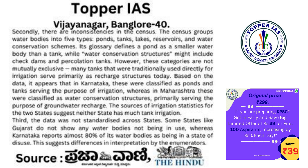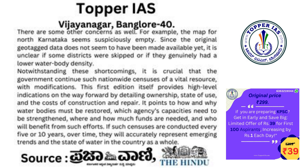Third, the data was not standardized across states. Some states like Gujarat do not show any water bodies not in use, whereas Karnataka reports almost 80% of its water bodies as being in a state of disuse. This suggests differences in interpretation by the enumerators. There are some other concerns as well — for example, the map for North Karnataka seems suspiciously empty. Since the original geotagged data does not seem to have been made available yet, it is unclear if some districts were skipped or if they genuinely had a lower water body density.